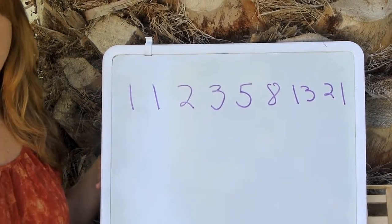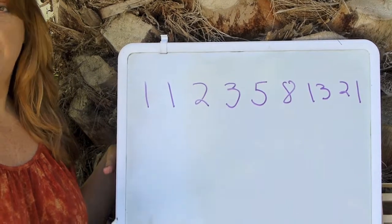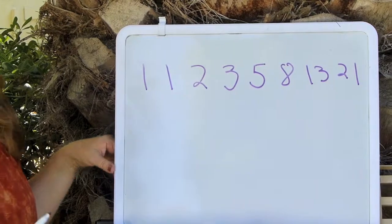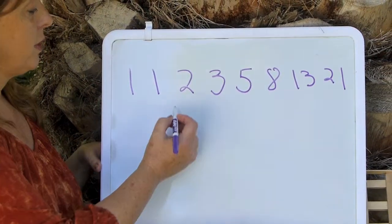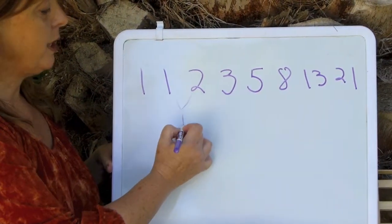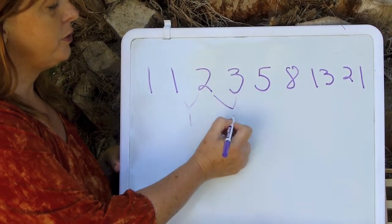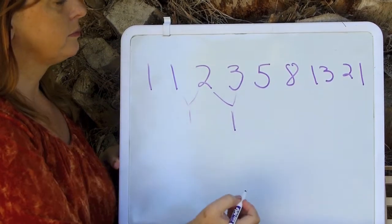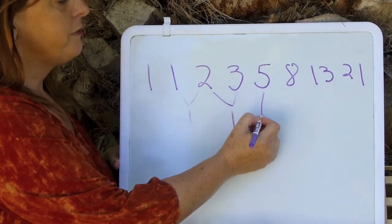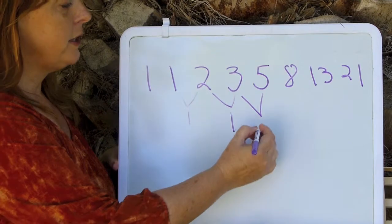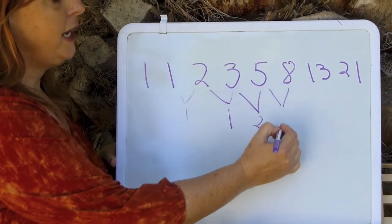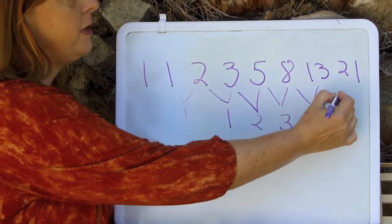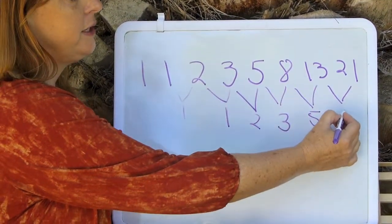Now we all know that to find the next number in a sequence we have to find the pattern in the numbers previously in the sequence. So let's look at the difference between consecutive numbers. The difference between 1 and 1 is 1. The difference between 3 and 2 is 1. The difference between 5 and 3 is 2. The difference between 8 and 5 is 3. 13 minus 8 gives us 5. And 21 minus 13 gives us 8.